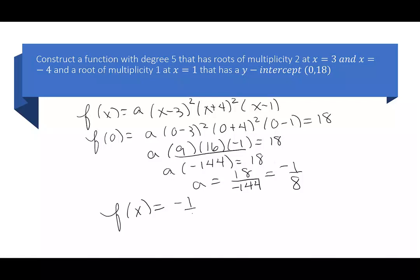I have f(x) is equal to negative 1 over 8, (x minus 3) squared, (x plus 4) squared, and (x minus 1).